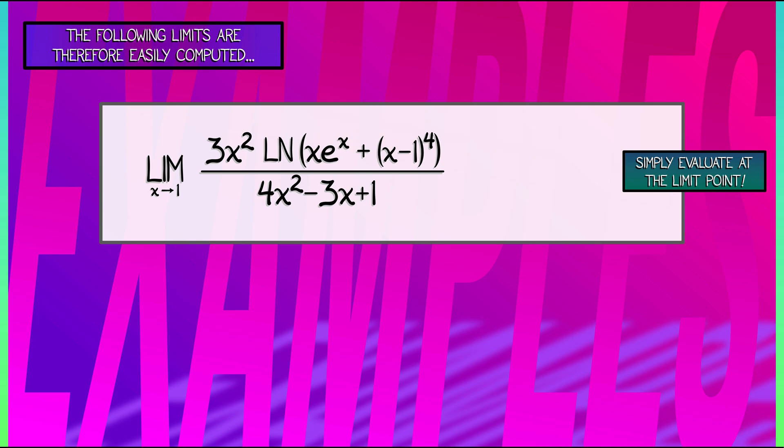log of e divided by 4 minus 3 plus 1. That's just 3 halves. That's super nice.